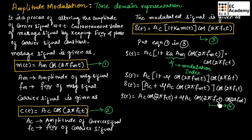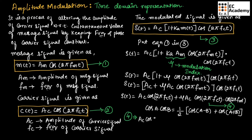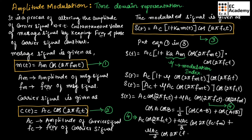In this equation, we have two cosine terms multiplied together. We can use the formula cos(A)·cos(B) = ½·[cos(A−B) + cos(A+B)]. Using this formula, equation 4 becomes: s(t) = ac·cos(2π·fc·t) + (μ·ac/2)·cos(2π·(fc−fm)·t) + (μ·ac/2)·cos(2π·(fc+fm)·t).